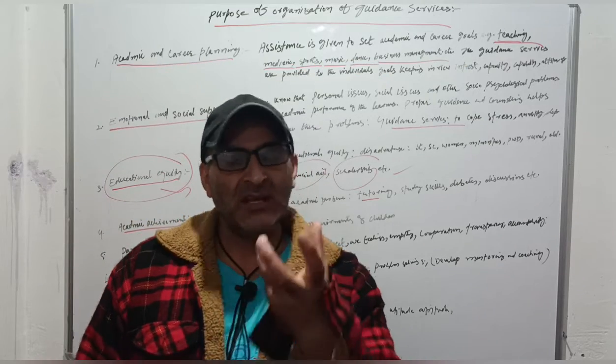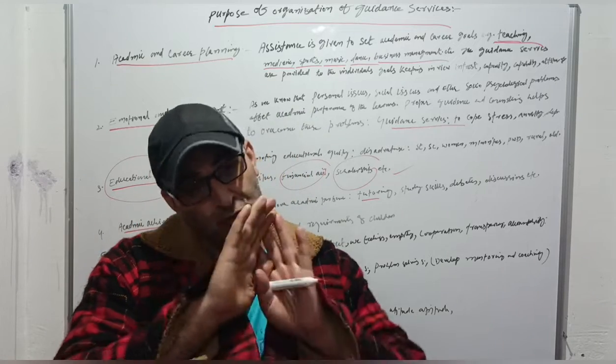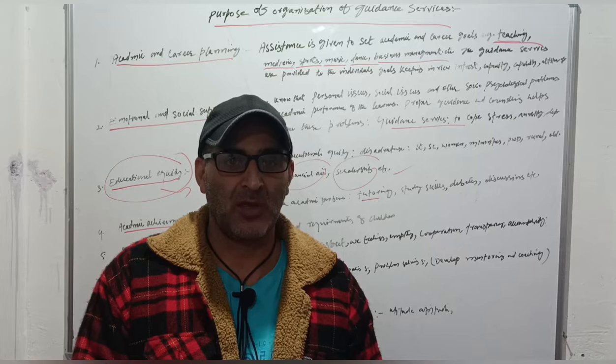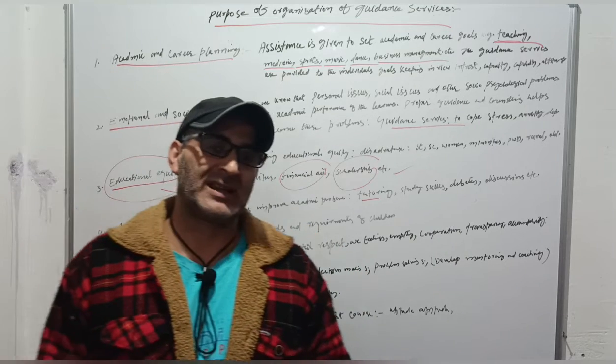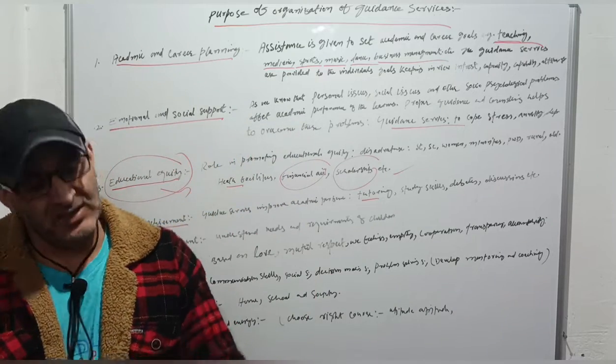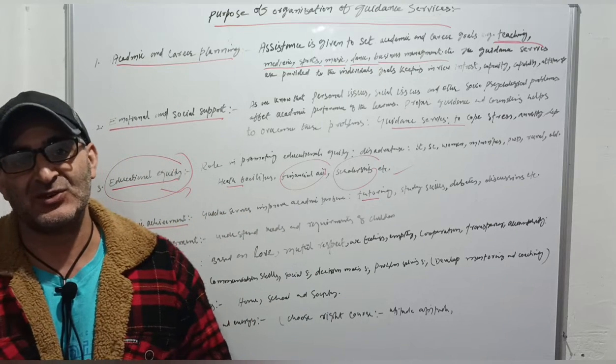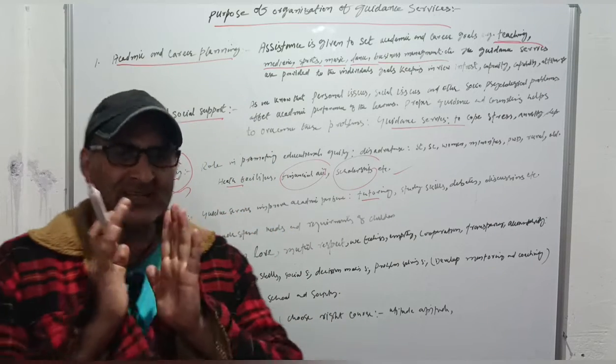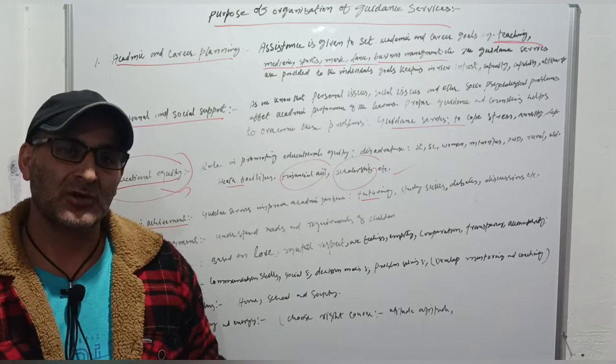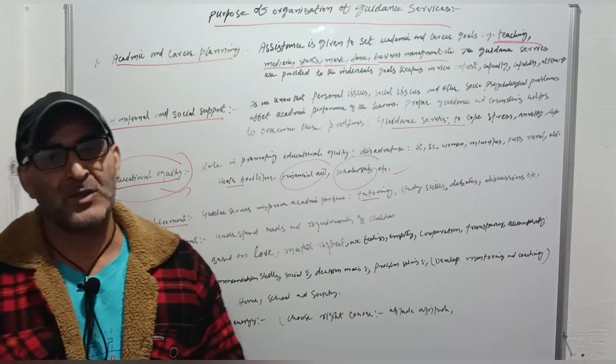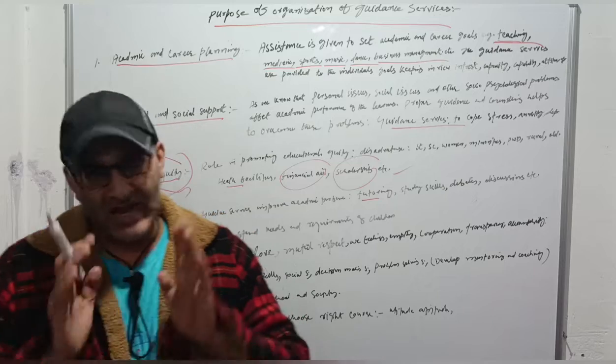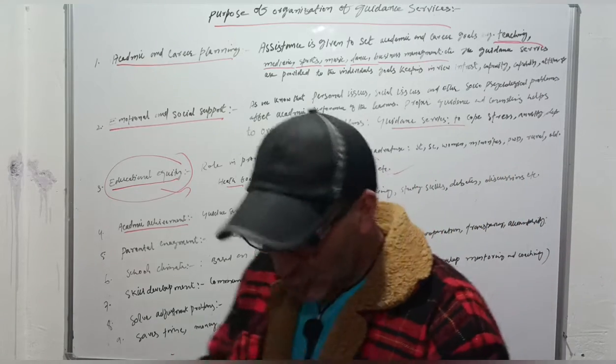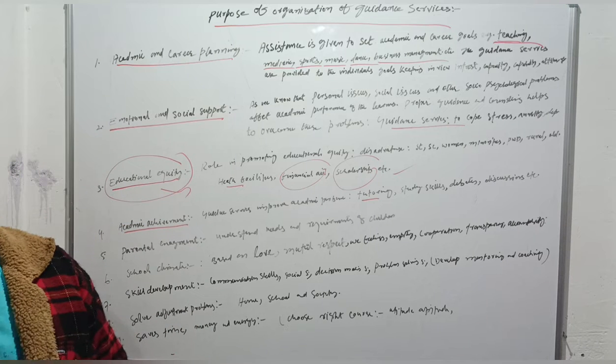Number 4: Academic Achievement. As we know that academic achievement simply means marks scored by the learner in a particular class or particular subject. In order to improve or enhance this academic performance, guidance services are needed. Every learner should be provided guidance services through tutoring, coaching, social skills, and other academic skills so that learners can improve their academic performance.